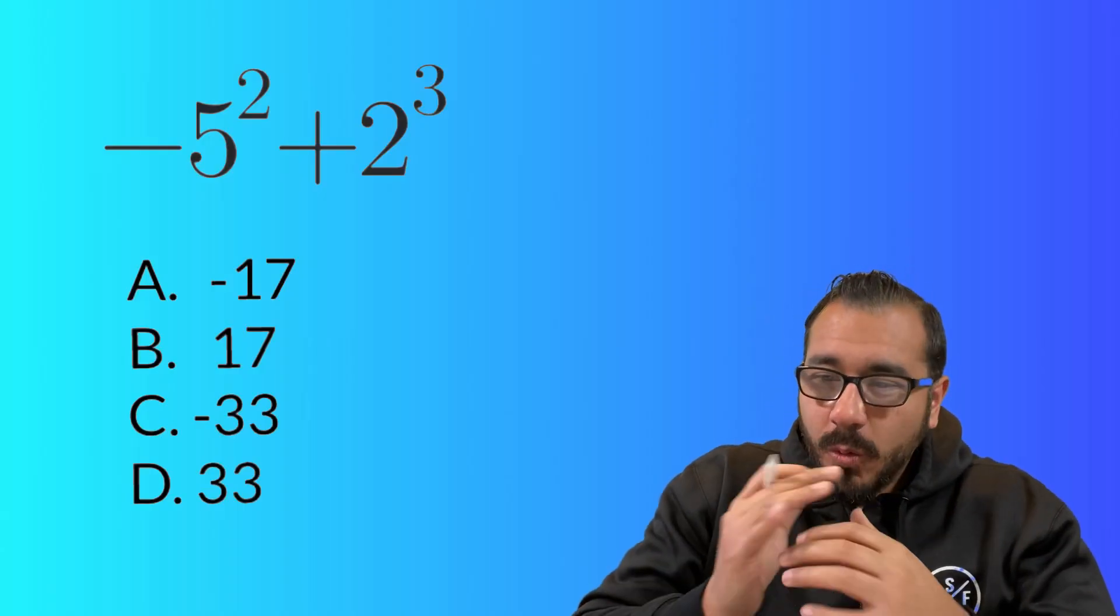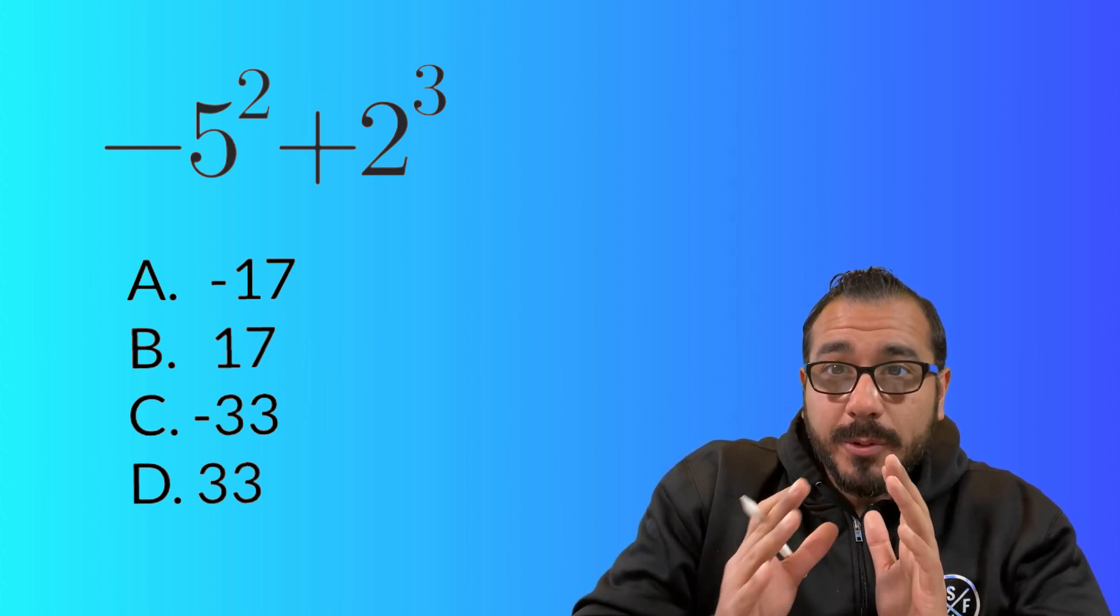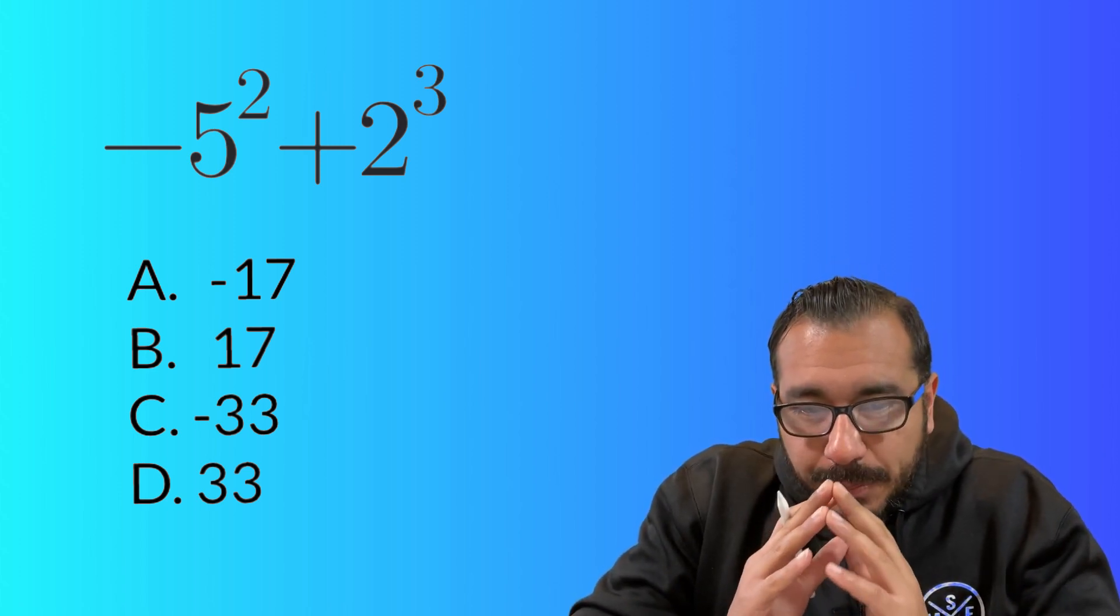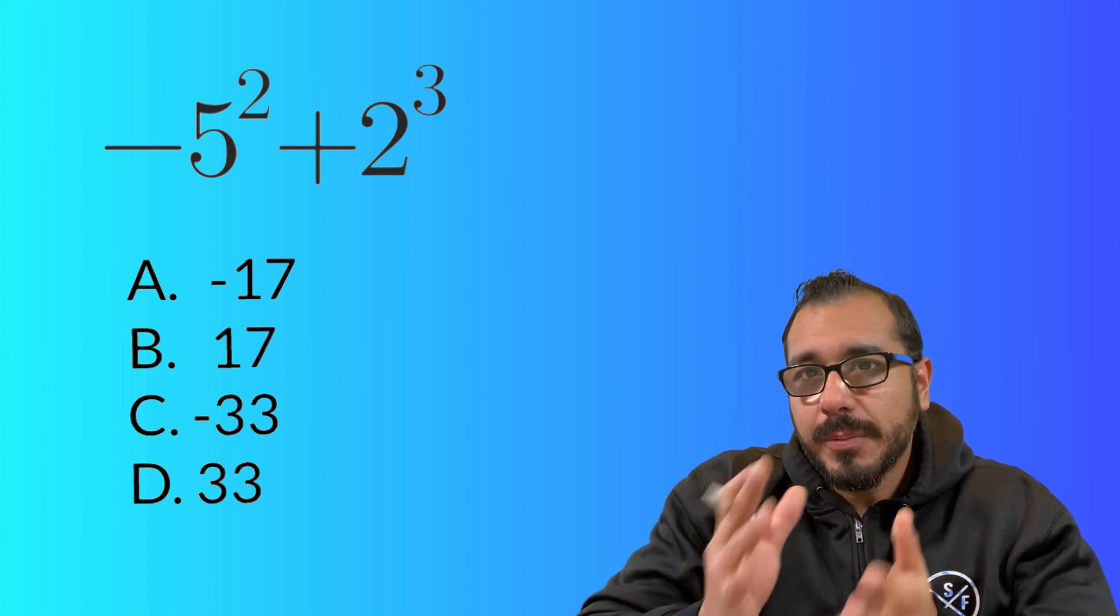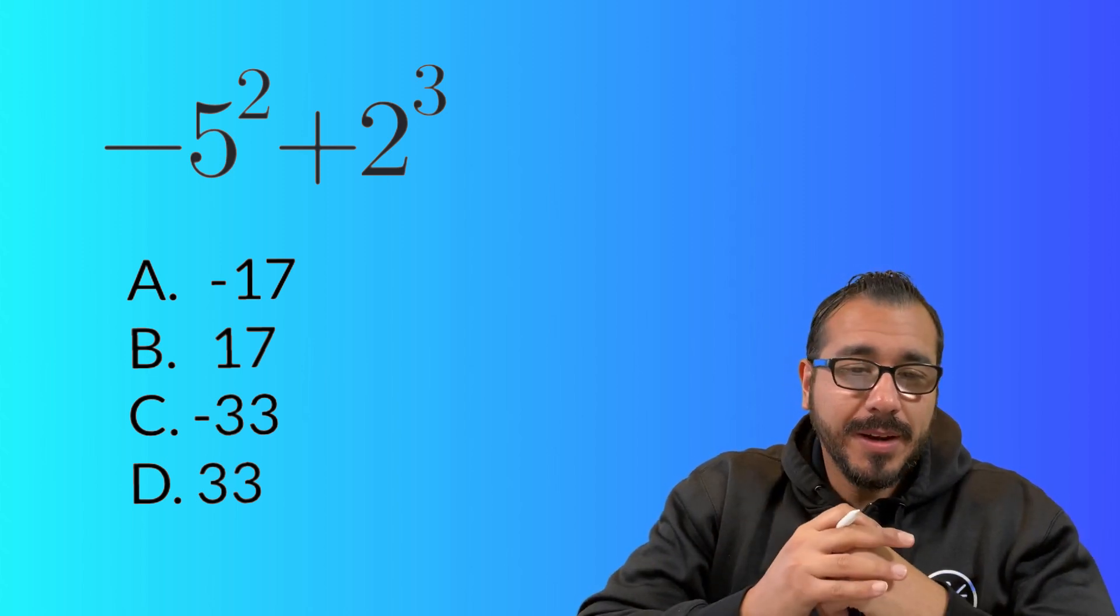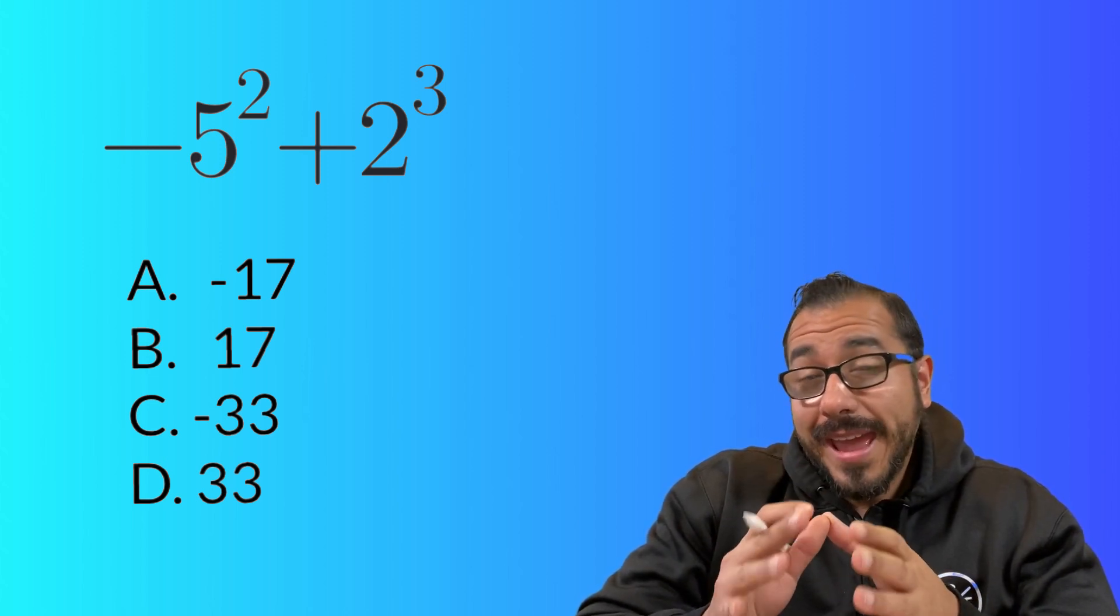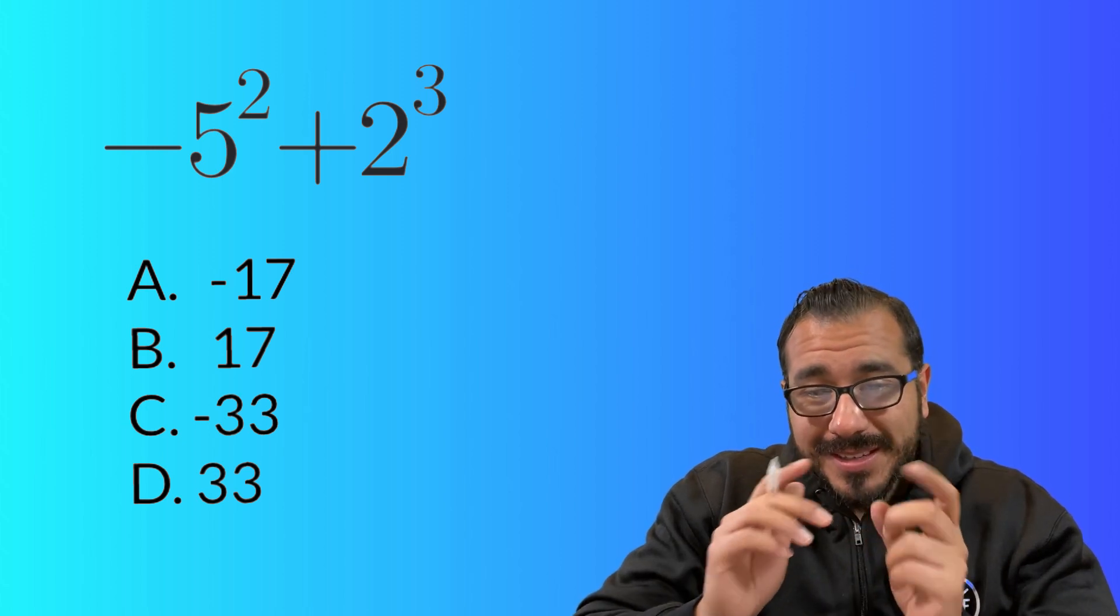All right. So what do we do here? The order of operations is very important. So we look for parentheses. We have no parentheses. We look for exponents. Do we see exponents? Yes.